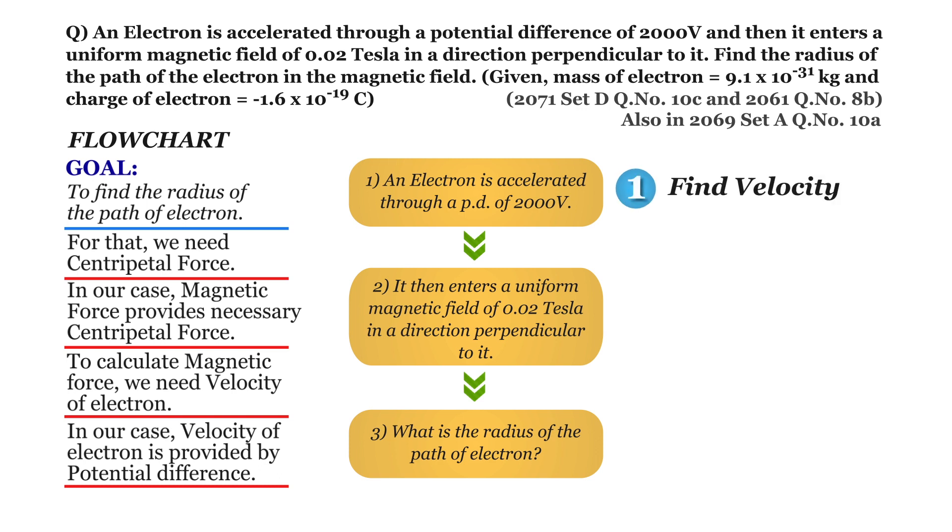If we use potential difference to find the velocity of electron in number 1, we can use its value in number 2 to calculate the magnetic force on the electron. And finally, by equating the magnetic force and centripetal force in number 3, we can find the radius of the path of electron.